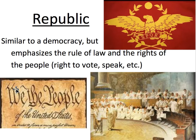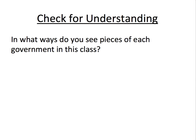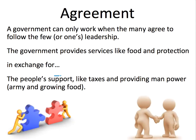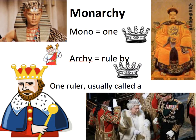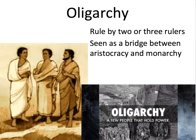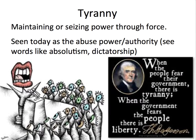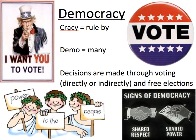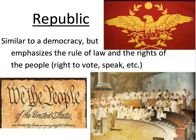The United States is not a democracy — it is a republic, a democratic republic. 'We, the people of the United States, in order to form a more perfect union...' Now you've learned about several types of governments. Let's check for understanding: In what ways do you see pieces of each government in this class? Do we have an agreement? How is it a monarchy? How is it an aristocracy? Does it have elements of an oligarchy? Is there tyranny? How is this class democratic? And in what ways is it a republic? Feel free to ask me any questions.